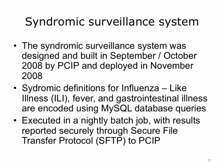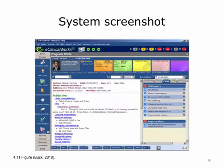In November 2008, PCIP and eClinicalWorks built a syndromic surveillance feature into their EHR system. The focus was on syndromic definitions such as influenza-like illness, fever, and gastrointestinal illness. These definitions were encoded as database queries that ran on each practice's system on a nightly basis, and the final result counts were then securely transmitted as a text file to PCIP's secure servers. The short answer for why we do syndromic surveillance is that we are looking for signals of potential illness in a community before we know the actual number of confirmed cases. Influenza is one disease we continually track, and it is important to know when to marshal resources to begin vaccinations and to identify potential new outbreaks.